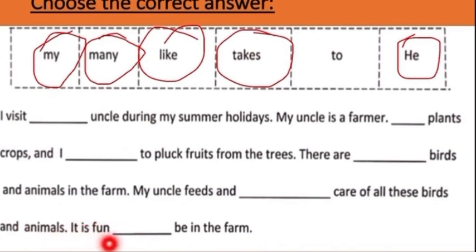So, he has a farm and he is taking care of the animals and birds. It is fun dash being the farm. It is fun to, yes. Last answer is to. It is fun to be in the farm. So, we use this word: my, many, like, takes, to, he. All these are sight words. We will see some more things next class, children.